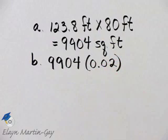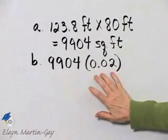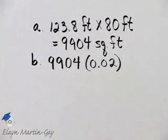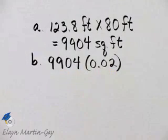That was ounces per square foot. So if this is the area of her lawn in square feet and she needs 0.02 ounces per square foot, we multiply 0.02 by 9,904.